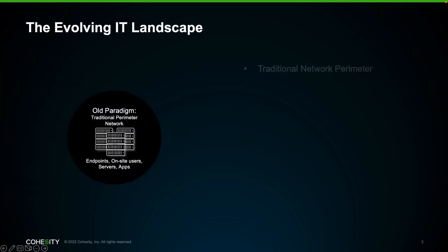Before we get into learning what Zero Trust is, we should first discuss today's IT landscape. Today's IT landscape has necessitated the need for stronger security. The old perimeter network security is no longer secure enough. The older network paradigm was based on providing security at the perimeter, but once users and devices were authenticated, they were given implicit trust to resources and data on the inside. Given today's sophisticated threats, such as socially engineered phishing attacks, this type of security design leaves organizations vulnerable.